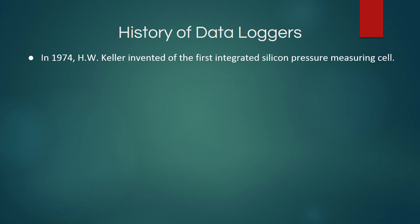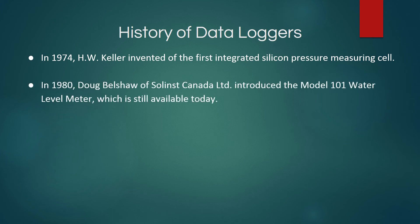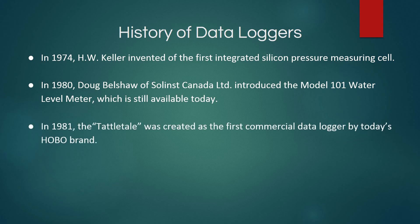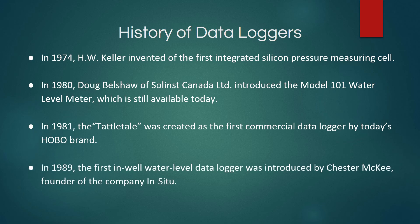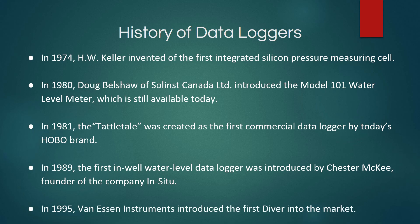The building blocks of today's advanced data loggers were founded in Switzerland in 1974 by H.W. Keller, inventor of the first integrated silicon pressure measuring cell. Keller then went on to establish the level and pressure company Keller America. A few years later in 1980, Solanist Canada LTD was founded by Doug Belshaw. Their first product was the model 101 water level meter, which is still available today. Solanist was greatly expanded, now offering data loggers, telemetry, interface meters, drive points, samplers, and multi-level systems. One year later in 1981, the first data logger was created in Massachusetts. Tattletail was the first commercial data logger, which spawned the now-famous Hobo brand data loggers. In 1989, the first in-well water level data logger was introduced by Chester McKee, founder of the company InSitu, another well-known data logger company in today's market. Since their first diver was introduced to the market in 1995, Van Essen Instruments has grown into a global leader in the water level monitoring industry, reaching over 200,000 diver deployments worldwide and more than 80 distributors in its international distribution network.